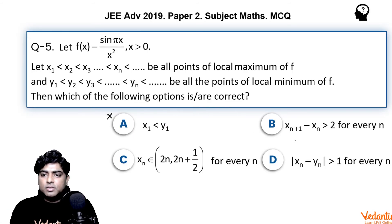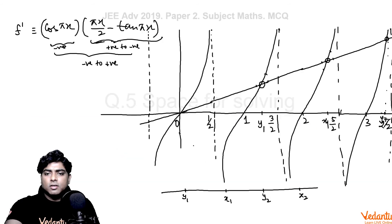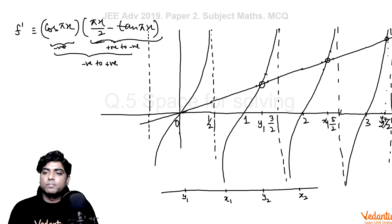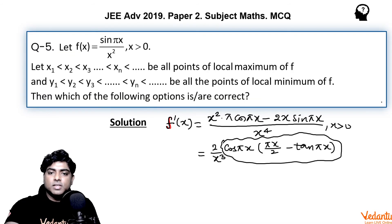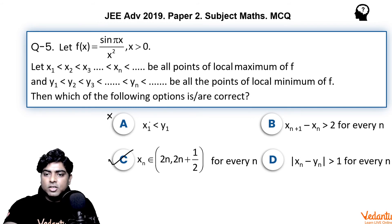Checking Option C: x₁ lies between 2 and 5/2, x₂ lies between 4 and 9/2, and in general xₙ lies in the interval (2n, 2n + 1/2), which means xₙ belongs to (n, 2n + ½). So Option C is correct.